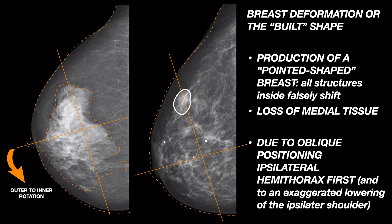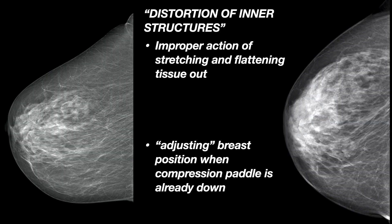Rotation could lead not only to loss of tissue, but also to a deformation of the breast — to the production of what I call a pointed-shaped breast — due mainly to an oblique position of the patient's thorax with respect to the detector, ipsilateral hemi-thorax first. All the structures inside falsely shift in the image. In a correct geometry of acquisition, the circled density you see in white would be in a very different position. Distortion of glandular structures and Cooper ligaments could be caused by improper stretching and flattening of tissue, improper positioning technique, or by adjusting breast position when the compression paddle is already down.